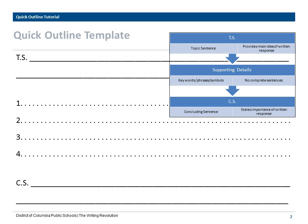The Quick Outline template is comprised of three sections. The TS denotes the topic sentence, which should be written as a complete sentence and provides the main idea of the written response. Next, the details are dotted lines to signal the use of only keywords, symbols, and phrases. Finally, the concluding sentence is written as a complete sentence and states the importance of the written response.